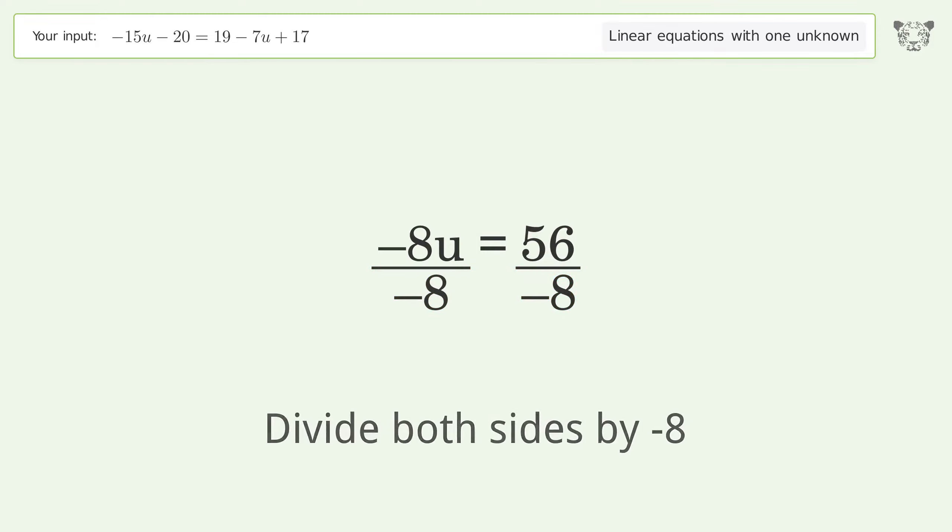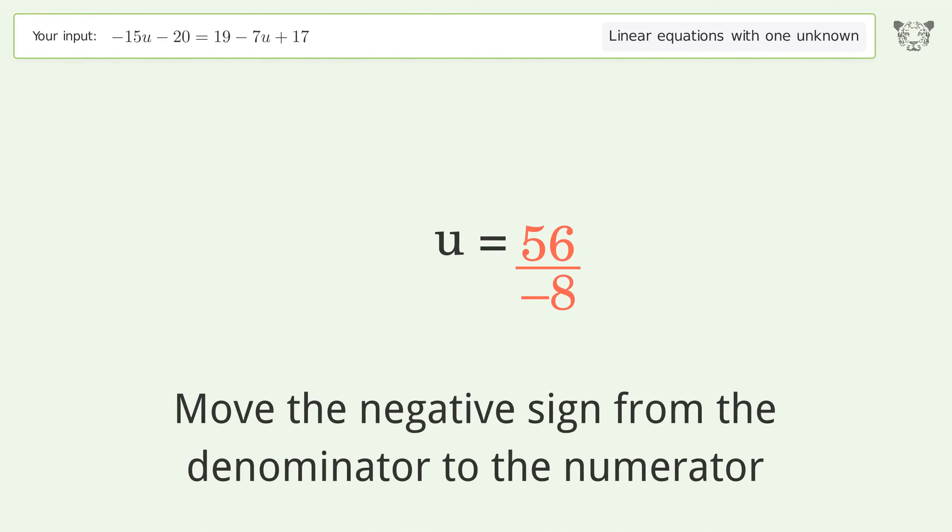Isolate the u. Divide both sides by negative 8. Cancel out the negatives. Simplify the fraction.